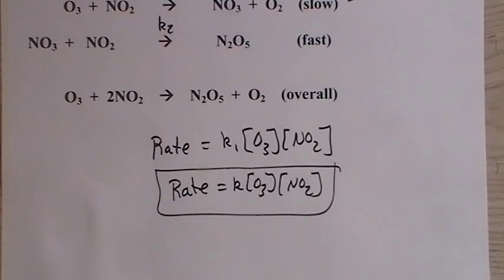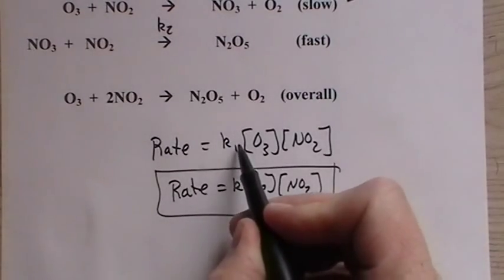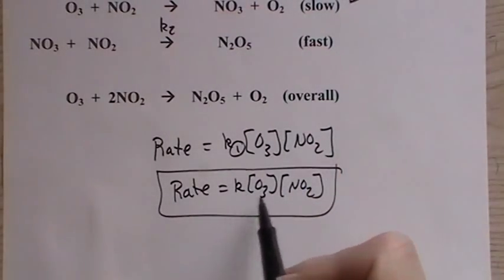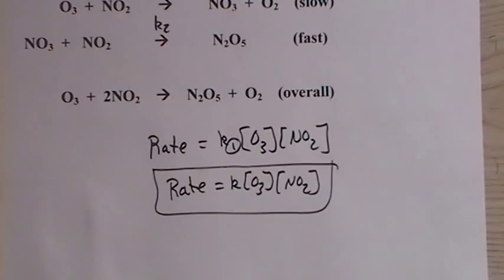But now, since this rate of the slow step is the same as the overall, we can get rid of that one and just make it into a regular rate law that we've dealt with. So the bottom line is, when you're given a mechanism, there's going to be a slow step. The rate law for that slow step is also the rate law for the overall step. It's an approximation, but it is a fantastic one. We're not taking into account the rate of the fast step, but it doesn't matter. Because it happens so quickly, it's really going to be lost in the rounding.